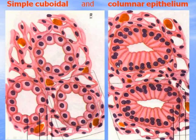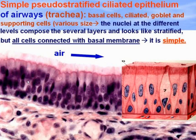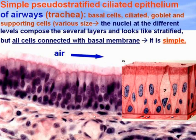There is simple cuboidal and columnar epithelium of the renal tubules. This is a simple pseudostratified ciliated epithelium of the airways, for example the trachea. You can see basal cells whose nuclei compose the first line, ciliated cells with cilia forming another line of nuclei, and goblet cells and supporting cells forming a third line of nuclei. The nuclei at different levels compose several layers and look stratified, but all cells are connected to the basal membrane, so it is really simple.